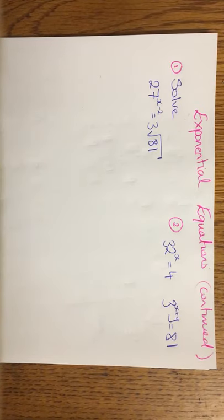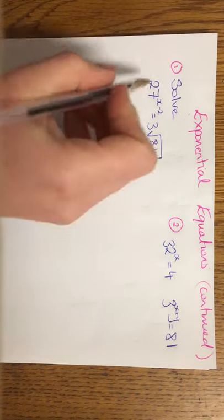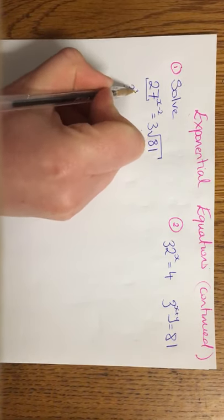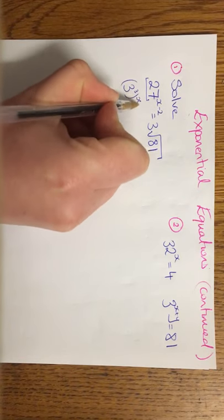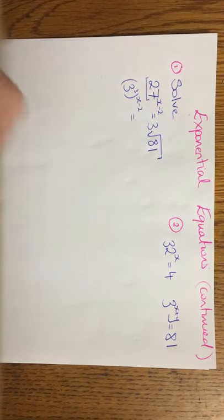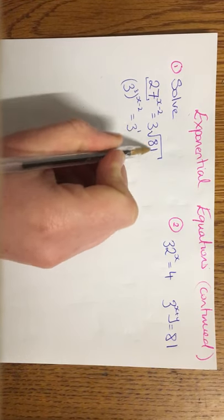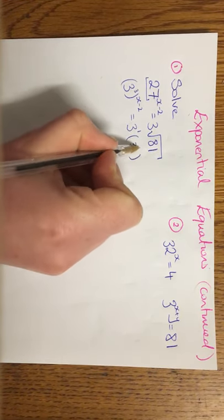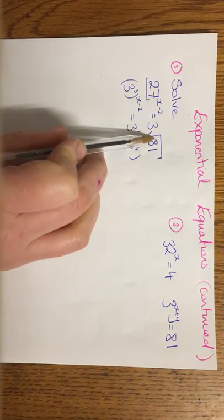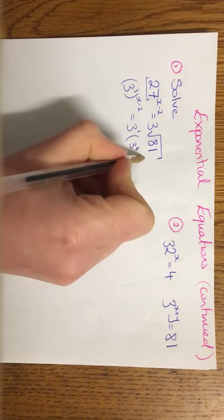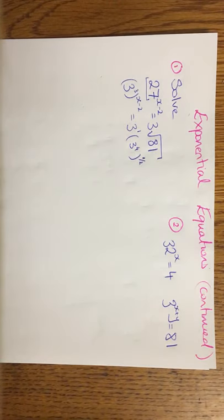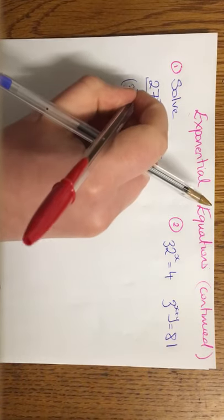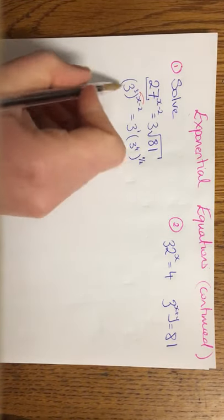Looking at 27, I know that my base number is going to be 3. So I'm going to rewrite 27 using 3 as a base. So that's going to be 3 to the power of 3, and that's all to the x minus 2 equals 3 to the power of 1. Now, 81 can be rewritten as 3 to the power of 4. And any time you have a square root, that's the same as the power of a half. So then, it's a power to a power you multiply. Power to a power you multiply.